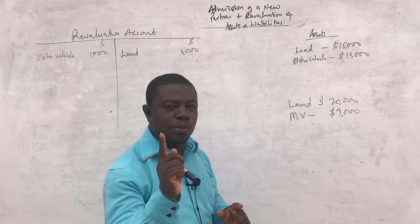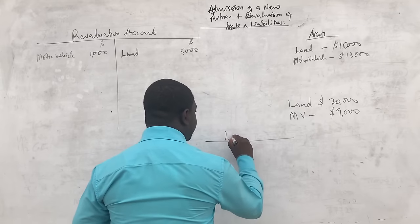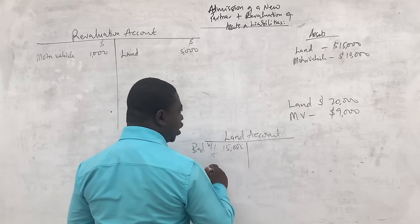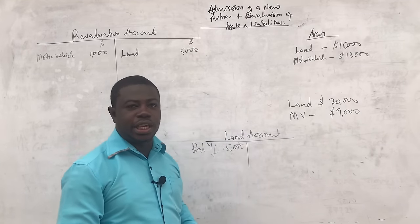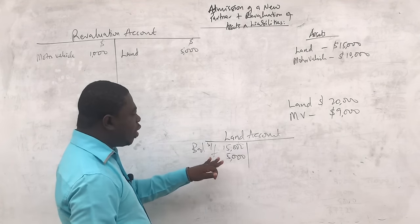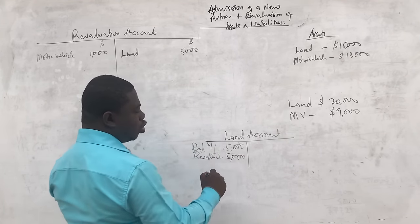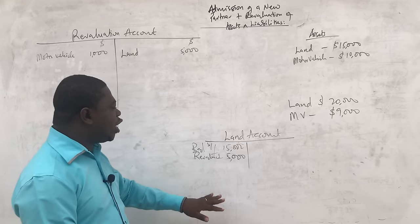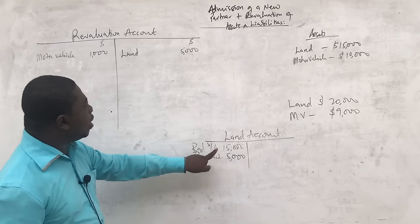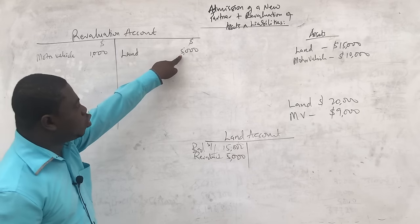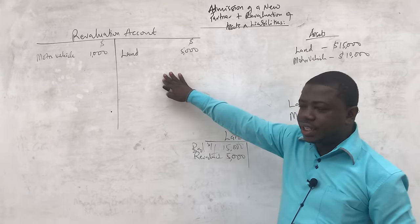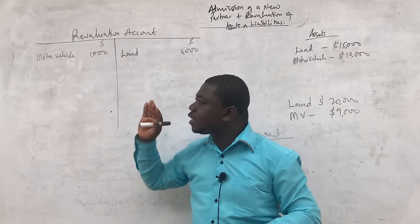To prove this from a double entry point of view: the land account has a balance brought forward of $15,000, and since it is revalued to $20,000, we add $5,000 to the debit side called 'revaluation', so the balance carried down is $20,000. The corresponding credit entry goes to the revaluation account in the name of land. For the motor vehicle, we credit $1,000 to the motor vehicle account as 'revaluation', so the balance carried down is $9,000, and the corresponding debit entry comes to the revaluation account.